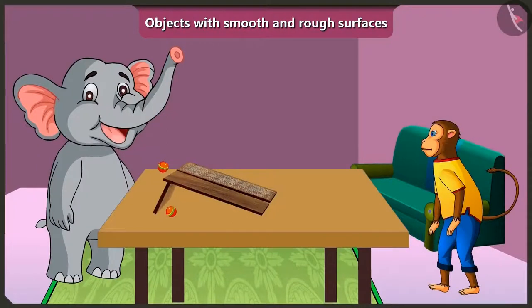Yes, now I understood. The ball rolls faster on this wooden slope because this slope has a smooth surface. And the ball rolls slowly on this slope because this slope has a rough surface. Well done Appu.